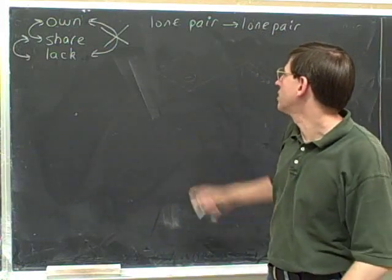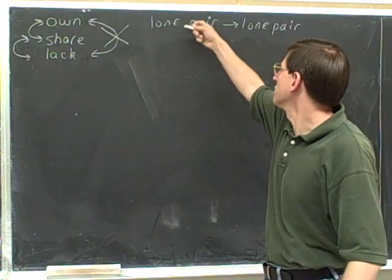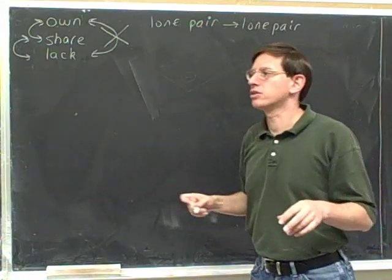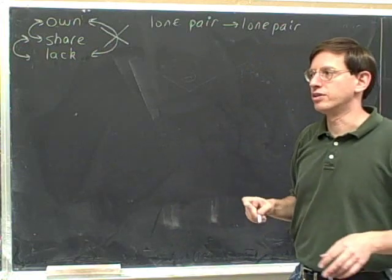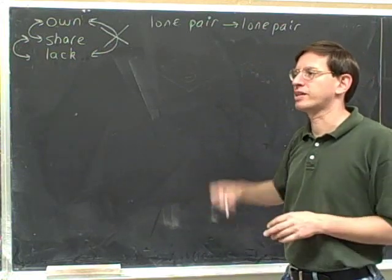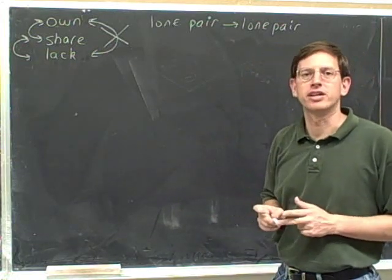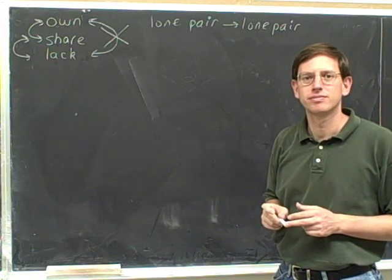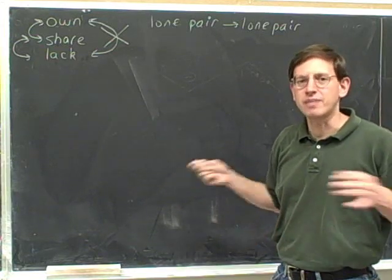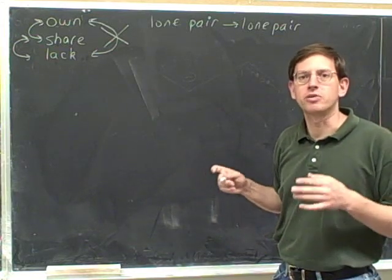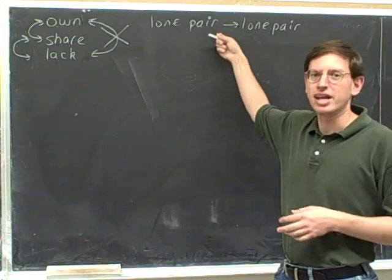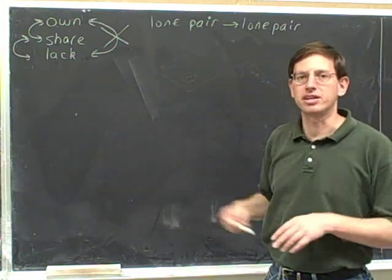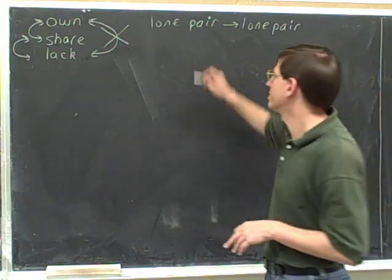How can you draw a legal arrow that moves a lone pair into another lone pair — that takes a lone pair on one atom and makes it into a lone pair on another atom? Well, this is never legal. It's never legal to take a lone pair on one atom and make it into a lone pair on another atom.